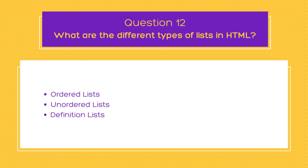The second question on today's list is: what are the different types of lists in HTML? The different types are ordered list, unordered list, and definition list. An ordered list is a numbered list of items — each item is preceded by a number starting with one by default. To create an ordered list, use the ol tag and wrap each list item in li tags.